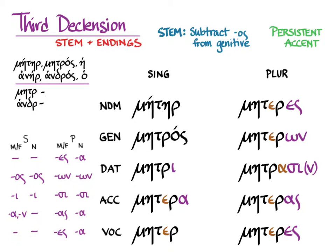The accent is persistent, sort of. The rule is that you learn the accent on the nominative singular, and then in the genitive and dative the accent is on the ultima. In all other forms it is on the penult — except for the vocative singular, where it is as recessive as possible. So across the entire plural, the accent is on the penult.